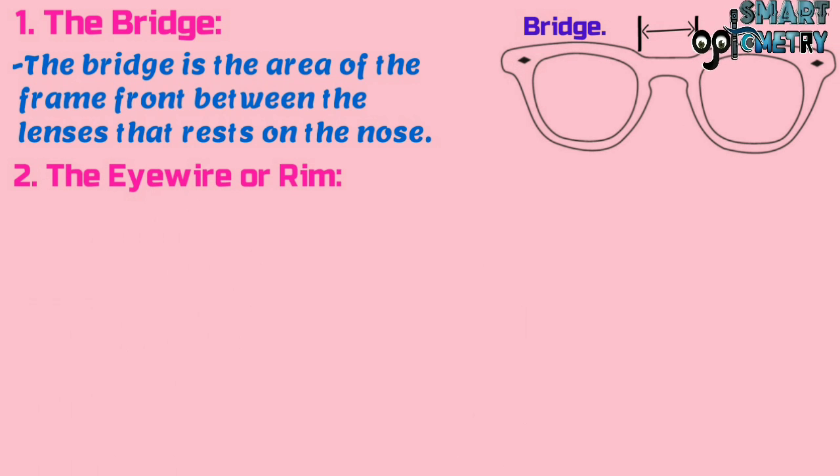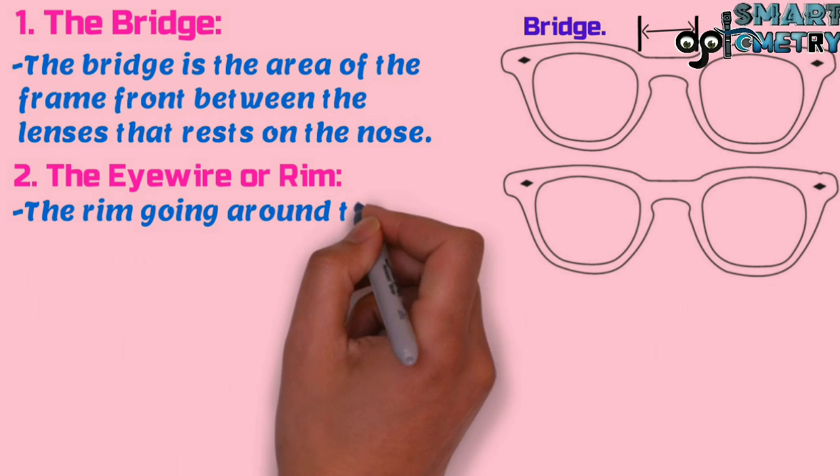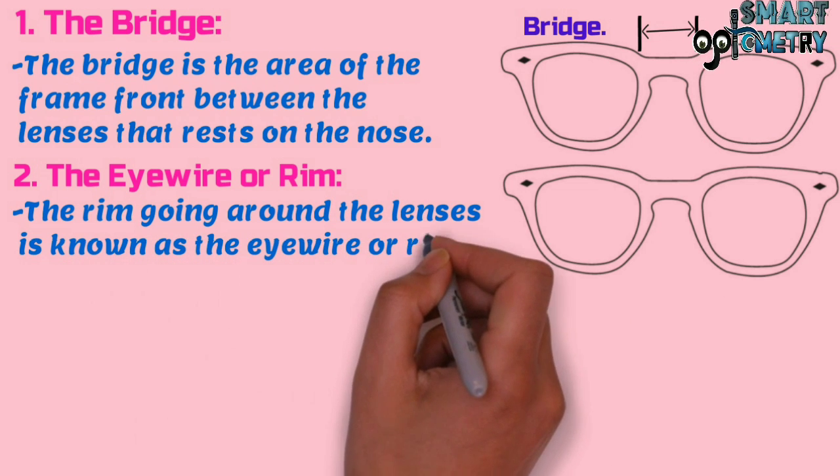Two, eye wire or rim. The rim going around the lenses is known as the eye wire or rim.